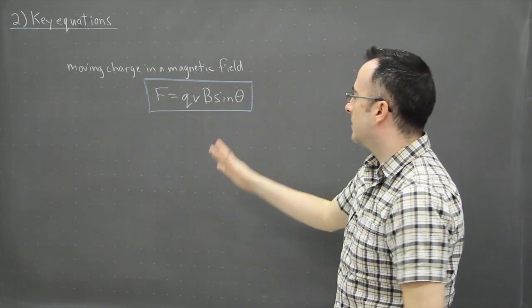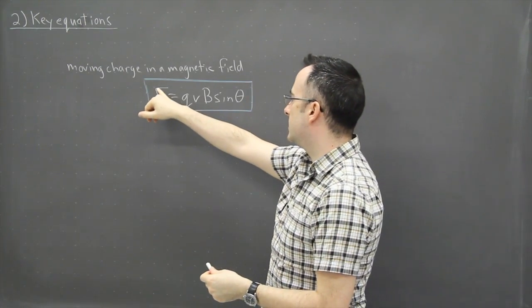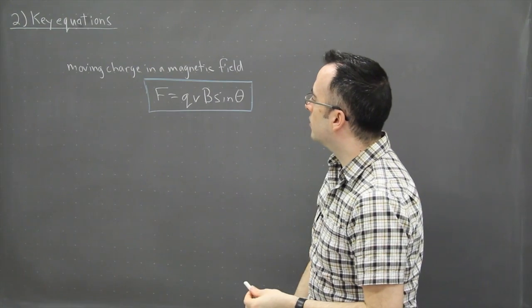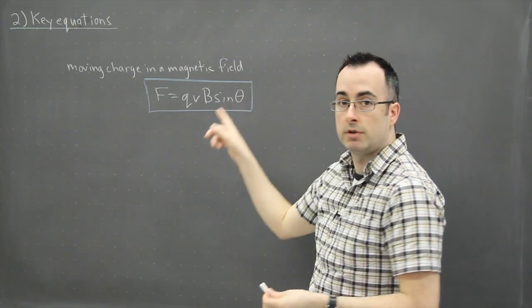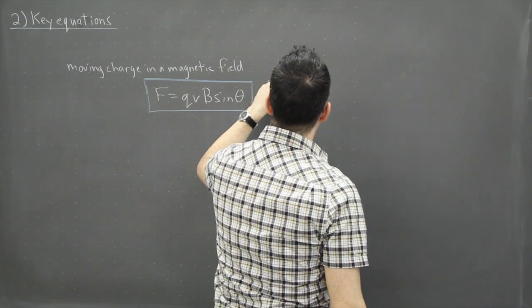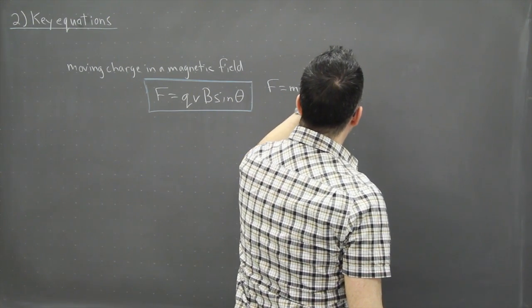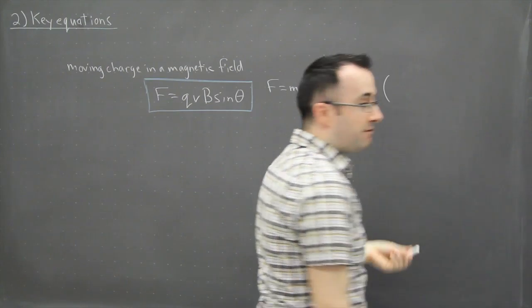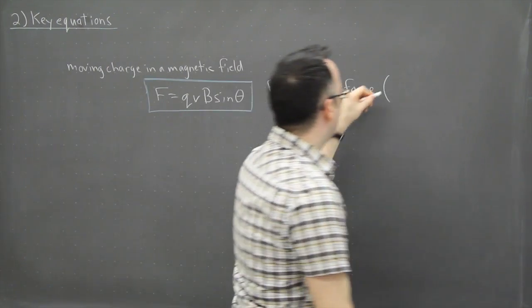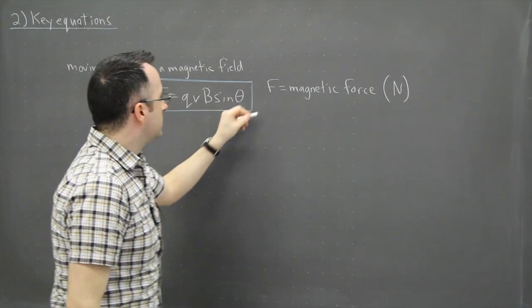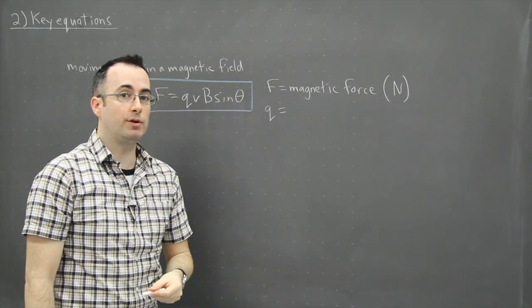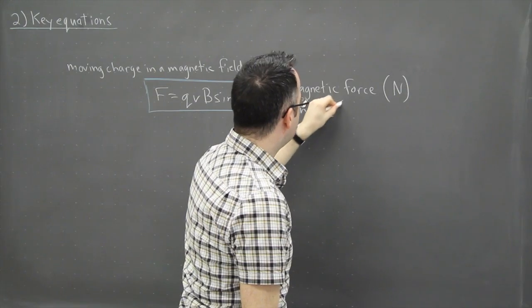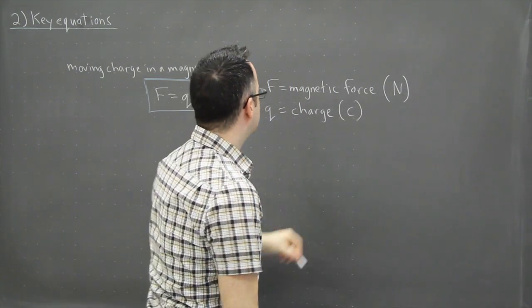Now maybe we'd better label a few things. They're a little bit sloppy here because technically this is a vector, this is a vector, this is a vector, but this is a scalar. But they don't differentiate between those. So first of all, what's F? F is the magnetic force. In other words, this is the force felt by the particle, by this charge. Magnetic force is measured in Newtons. What's Q? Q we've looked at from Topic 5, that's the charge. So this could be the charge of the electron or proton or whatever else. Charge is measured in Coulombs, so that's the charge of the particle.